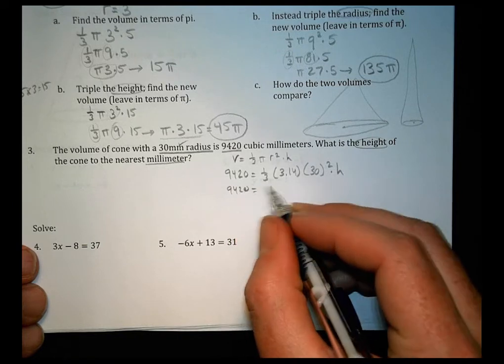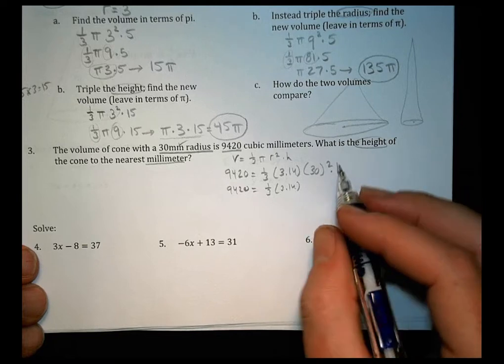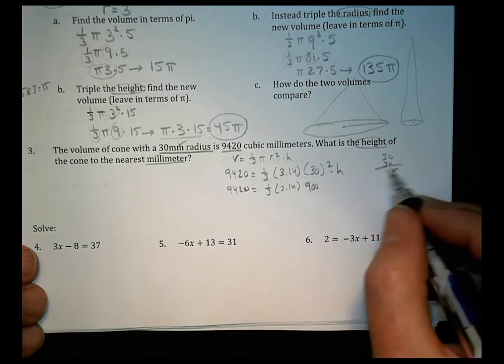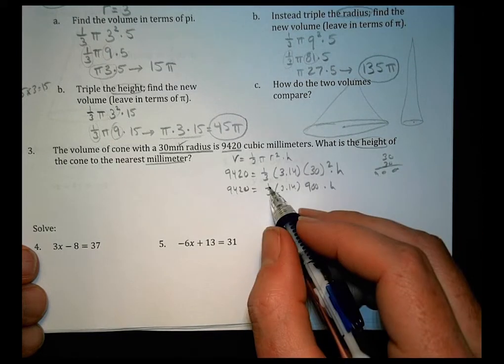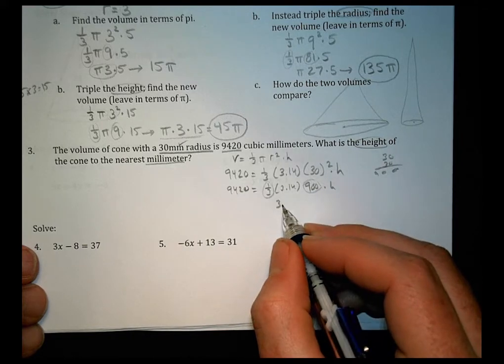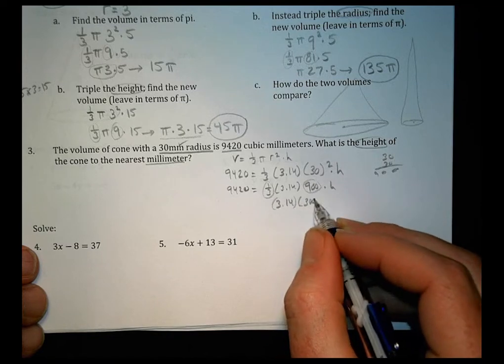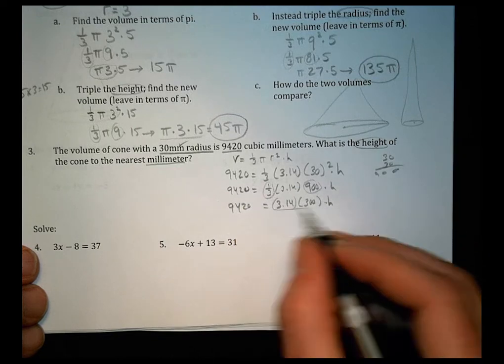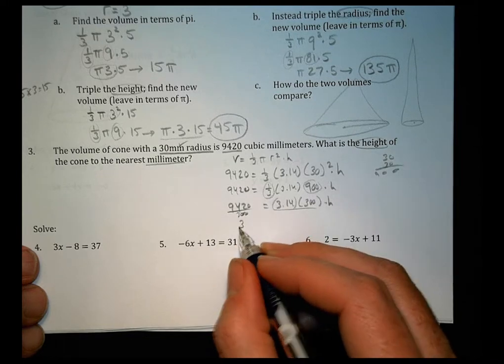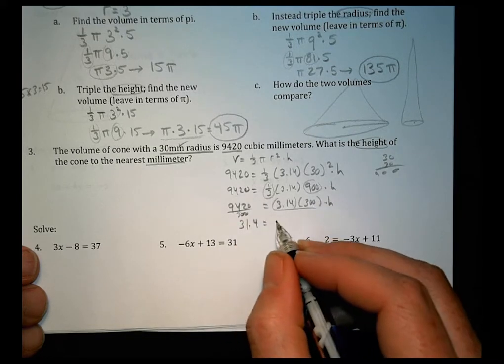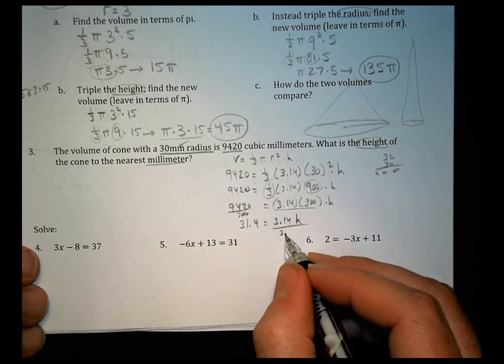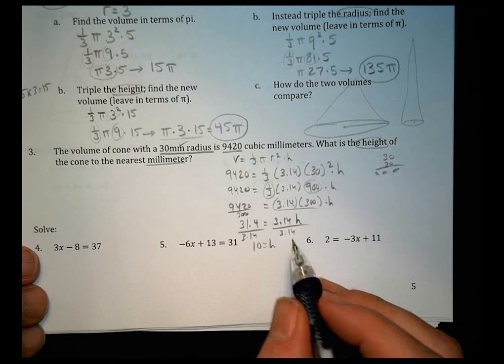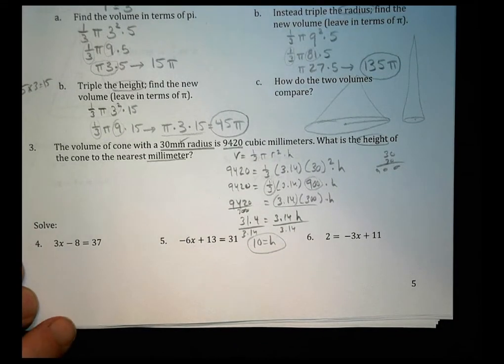This stays 9,420. This stays a third. This stays 3.14. 30 squared is going to be equal to 900. Right? 30 times 30, 009. And times h. Now let's do 1/3 of 900. It's going to be 300. So we have 3.14 times 300 times h. All still equals 9,420. If I divide both sides by 300, then I have 31.4 equals 3.14h. If I divide both sides by 3.14, then I find out that 10 equals h. So what's the height? The height would be 10 and that's all there is to it.